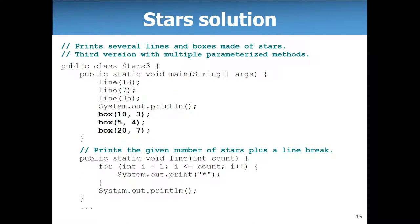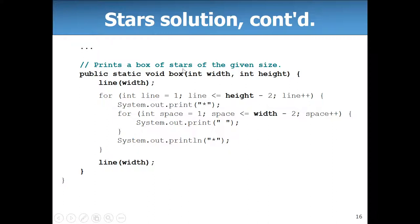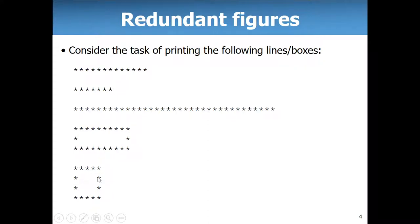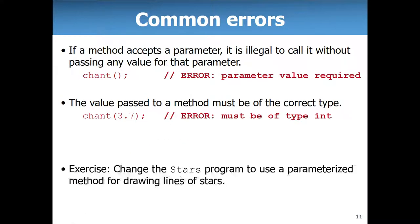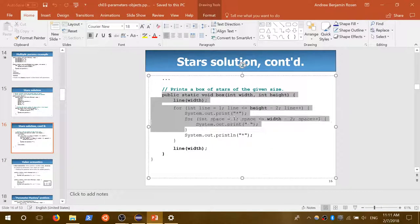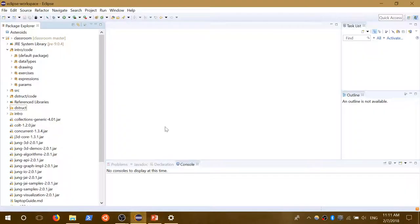Here's modifying a box method to print a box of a given size. We start with a line as wide as the box and end with one, taking care of two of the rows. The outer loop runs height minus 2 times. Each iteration prints a star at the beginning, then width minus 2 spaces, then a star at the end on the same line. Let's go ahead and copy this into Eclipse so we can actually play with it.